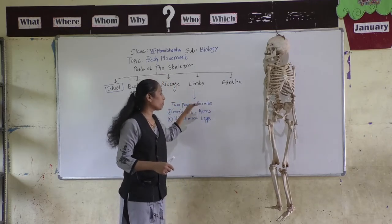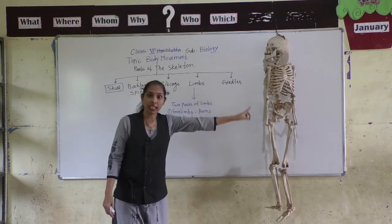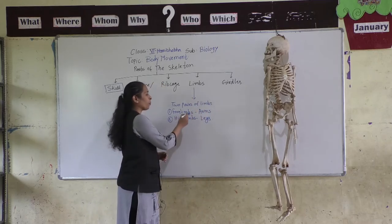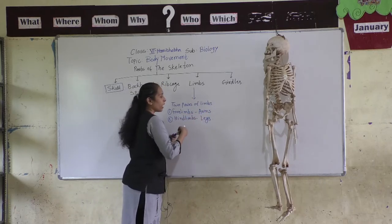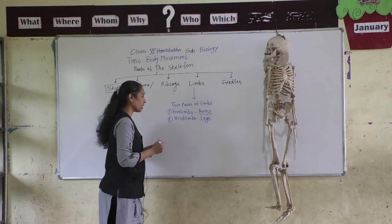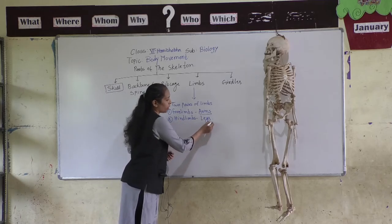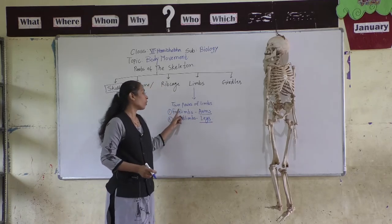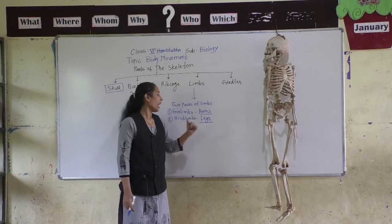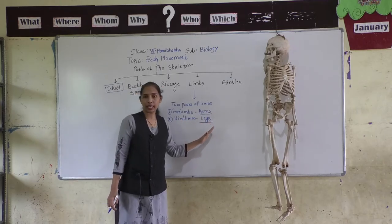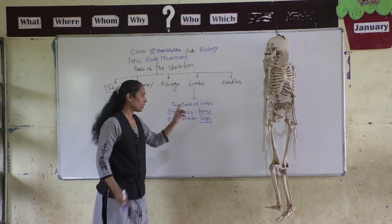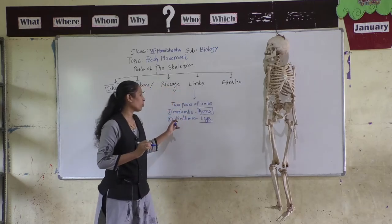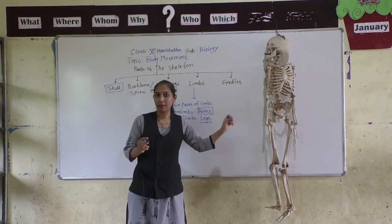The two pairs of limbs are: forelimbs, also called arms, and hind limbs, also called legs. So forelimbs means arms and hind limbs means legs. First we will discuss about the forelimbs or arms.